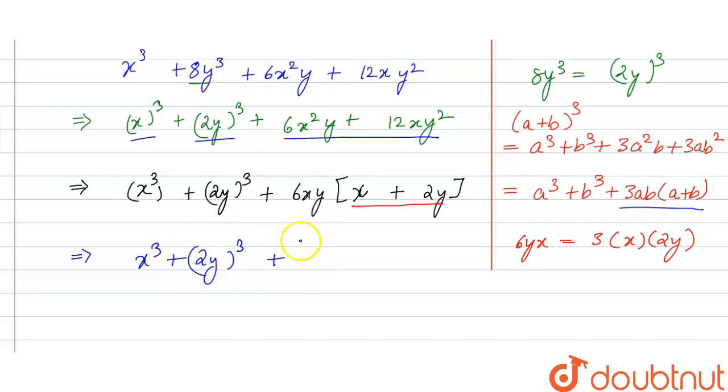So we have made the term of x cube plus 2y whole cube and writing this 6xy as 3x into 2y.